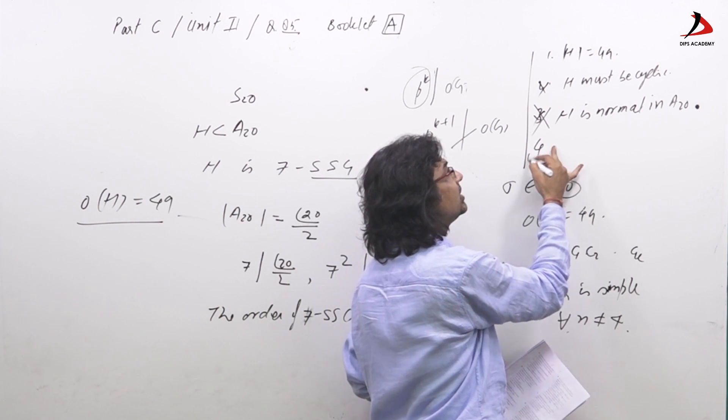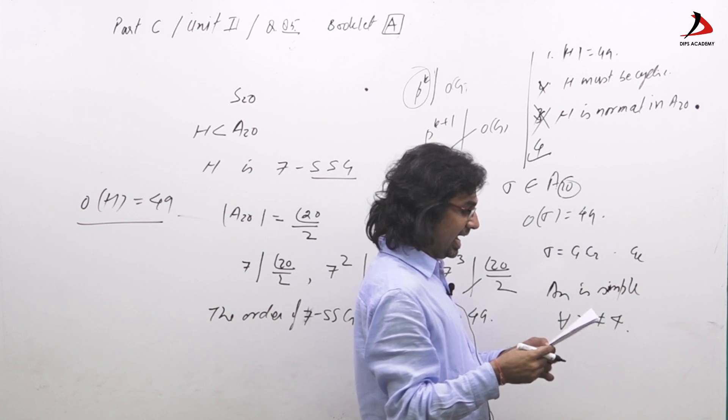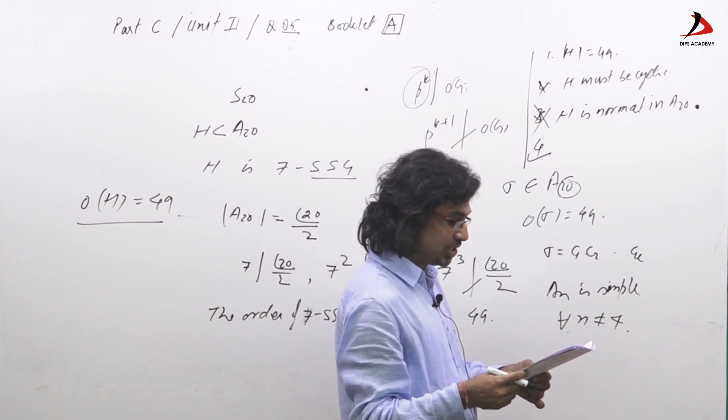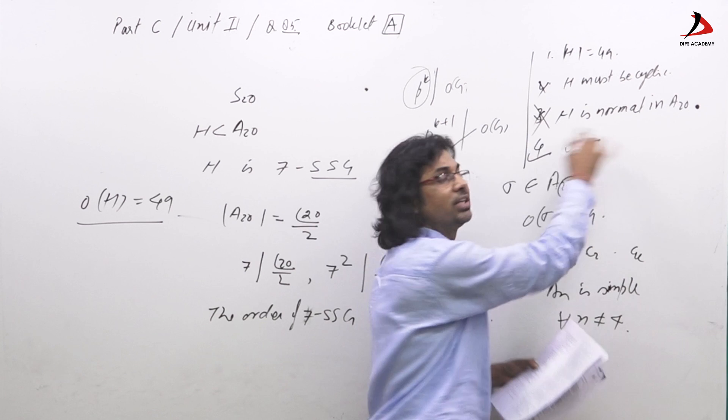So option 4 is also correct, which says any 7-SSG Sylow subgroup of S_20 subset of A_20 is also correct.